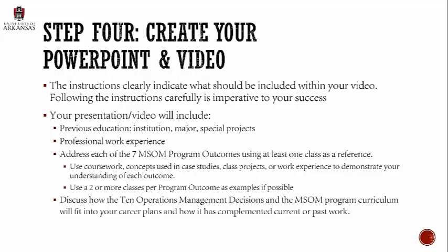For the program outcomes, they're listed on the website and will be in Blackboard once you get there. You're going to list them out one by one. For each program outcome, demonstrate your understanding using classes you took within the MSOM program — list a couple of classes and really talk about that outcome, how you understand it, how you learned it. You'll go through all seven program outcomes, then switch to the 10 OM decisions. At that point you get to talk about yourself — how the 10 OM decisions relate to your work history, career goals, what you plan to do with the MSOM degree.